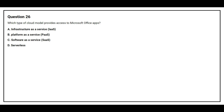Question number 26. Which type of cloud model provides access to Microsoft Office apps? Option A: Infrastructure as a Service. Option B: Platform as a Service. Option C: Software as a Service. Option D: Serverless. The correct answer is Option C, Software as a Service.